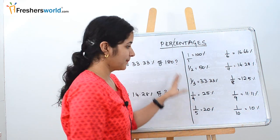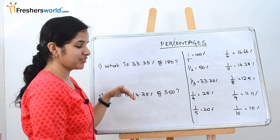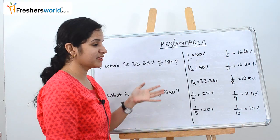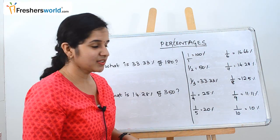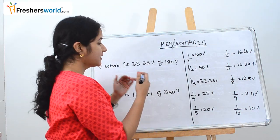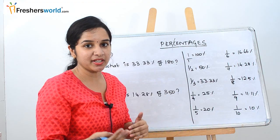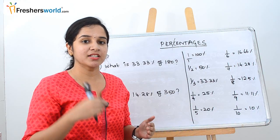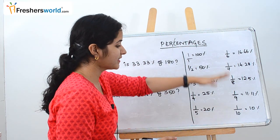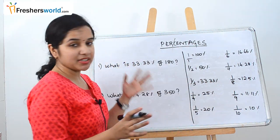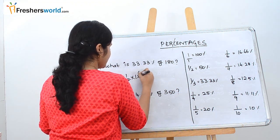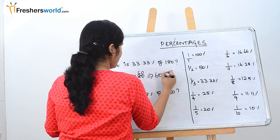Where is this useful? You will find these questions a lot in aptitude examinations. They will ask: what is 33.33 percent of 180? If you don't know the table, you'd have to use the elaborate method of 33.33 divided by 100 into 180 — very time consuming. But if you know the table, you know directly that 33.33 is nothing but 1 by 3. So 1 by 3 into 180 is nothing but 60.